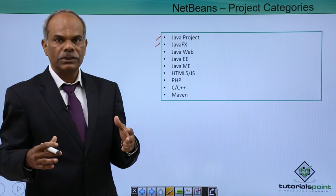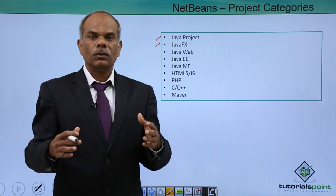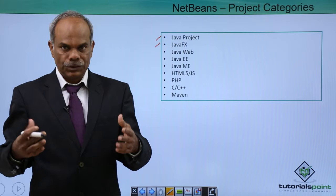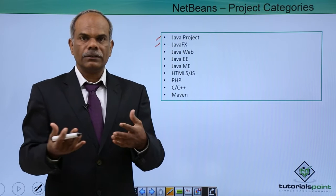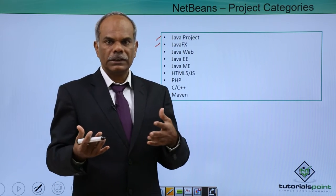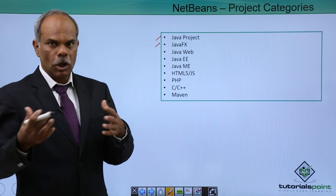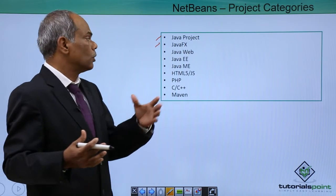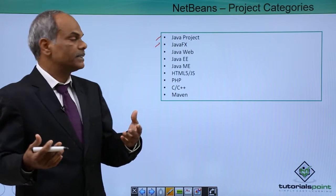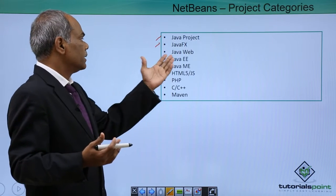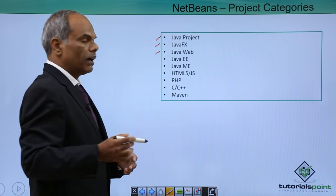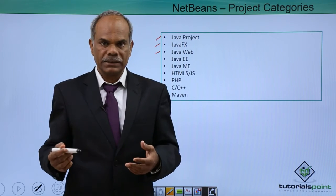Java web applications, which are to be hosted on certain Java-enabled servers like Glassfish or Tomcat or any other Java-enabled servers, on top of which if you want to deploy certain web-based applications — that will be the third category: Java web applications.